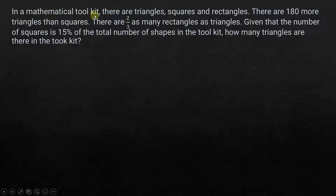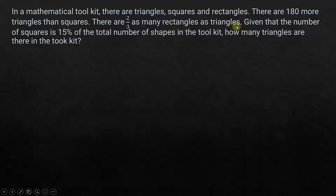In a mathematical toolkit there are triangles, squares, and rectangles — three types of shapes. The first condition is: there are 180 more triangles than squares.